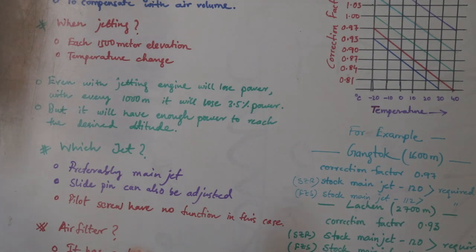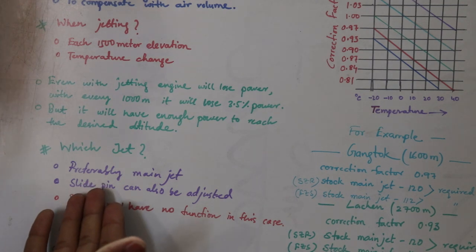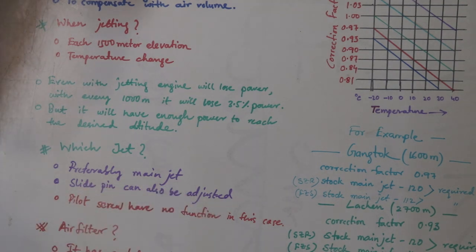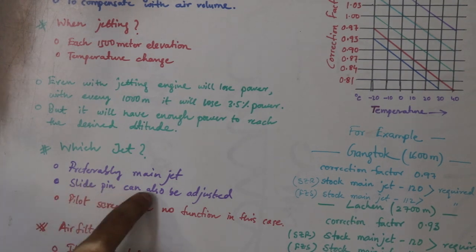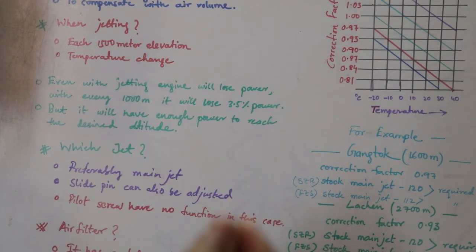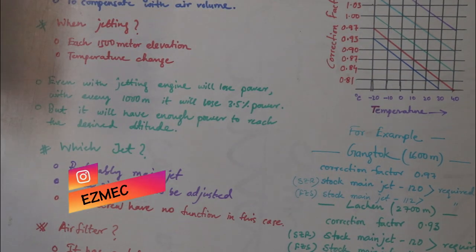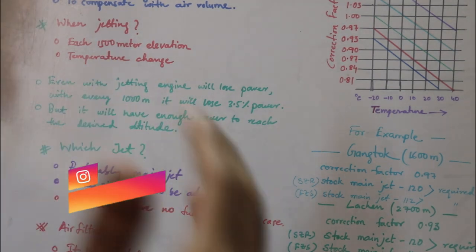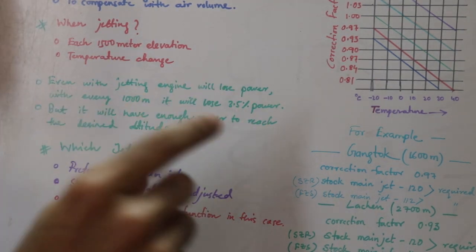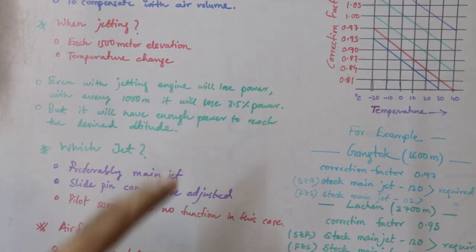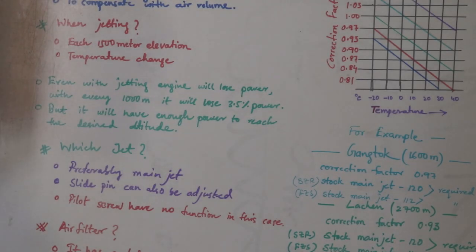Preferably the main jet you should change, and the slider pin can also be adjusted. In some carburetors the slider pin, there is a pin coming from the diaphragm that is called the slider pin, that is adjustable. There are some points in the pin in the head of the pin and that can be set high or low. So according to that you can set the pin height, but that is also not available in all the carburetors.